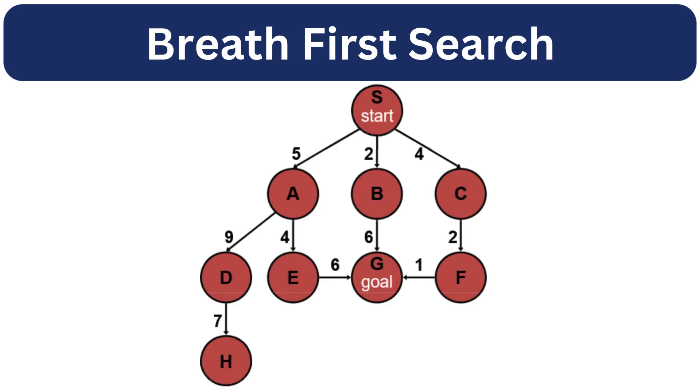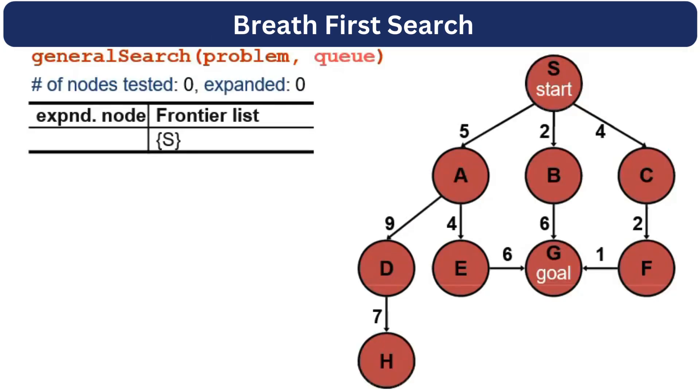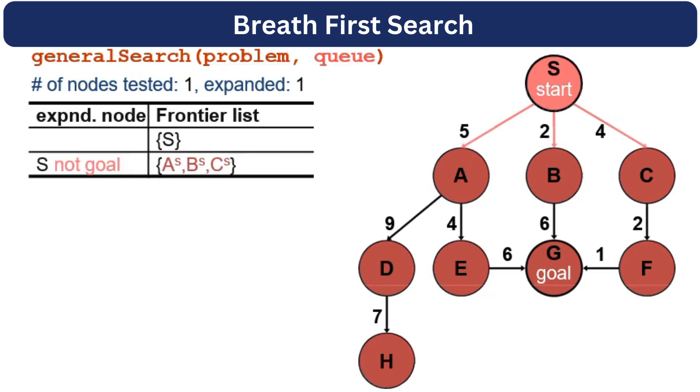Let's explain it using an example. Here we have a graph that contains 9 nodes. S node is the starting node and G node is the goal node. Our task is to apply the breadth-first search algorithm to start from the S node and reach the goal node G. We will create a table that contains the expanded node and our queue list. We will start with the S node, expand it, and we will get A, B, and C. Note that we have written S at the top of A, B, and C to indicate that they are expanded from S.